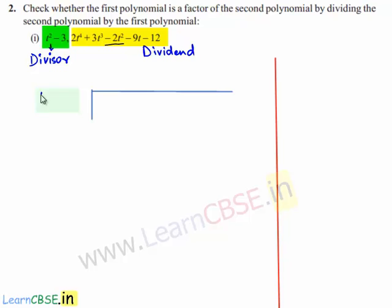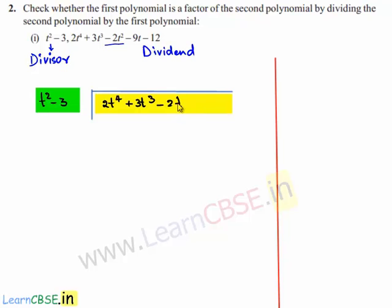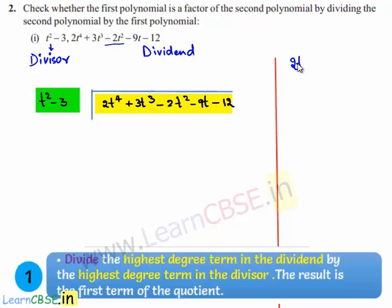The divisor, which is t²-3, is written here and the dividend, which is 2t⁴+3t³-2t²-9t-12, is written here. The highest degree term of the dividend is 2t⁴ and the highest degree term of the divisor is t². On dividing them, we get 2t², which is written at the place of the quotient.